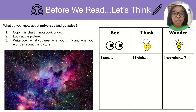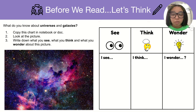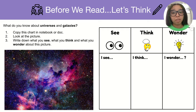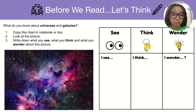Before we read, let's think. You are going to do a See, Think, and Wonder chart in your notebook. You are going to answer this question: What do you know about universes and galaxies? First, you will copy this chart in your notebook or in a document. Then you will look at this picture and write down what you see, what you think, and what you wonder about this picture.